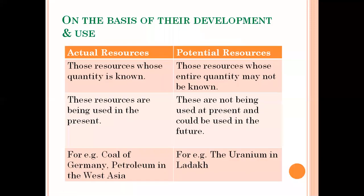We talked about the classification of natural resources. Natural resources are classified into different groups depending upon their nature. On the basis of their development or use, we classified natural resources into actual resources and potential resources. Actual resources are those resources whose quantity is known, and potential resources are those resources whose entire quantity may not be known to us.